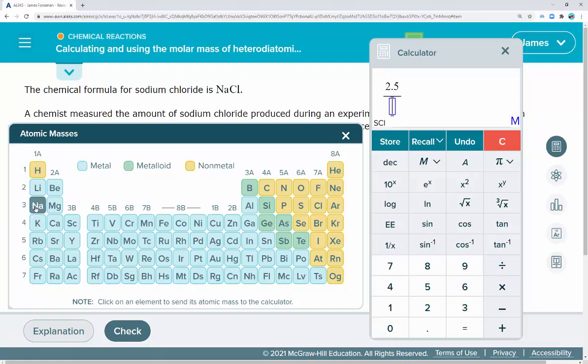We can simply click on sodium, then plus, then chlorine, and that adds up the molar mass for us. We can say equals and here we have our result.